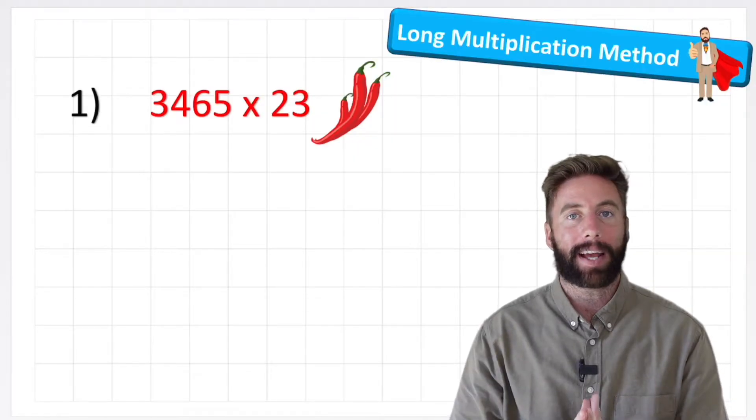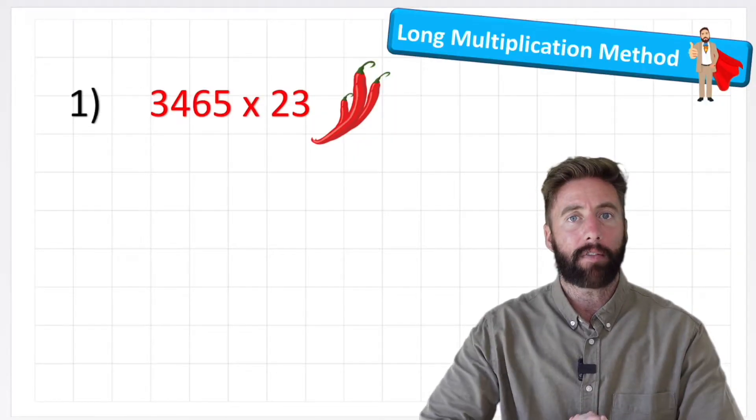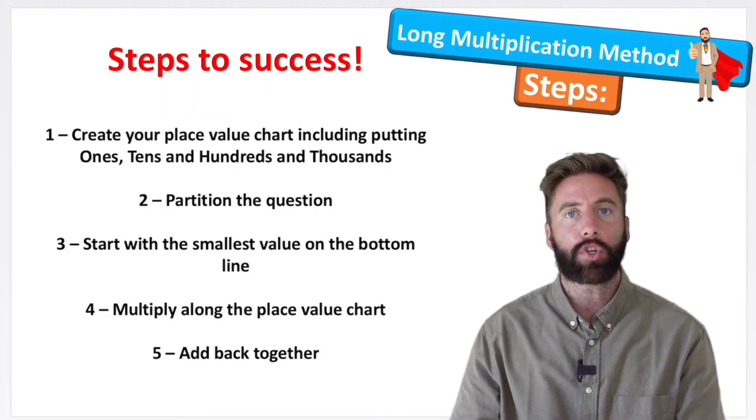Okay, so the example we're looking at is 3465 multiplied by 23. And if we just look at our steps to success...